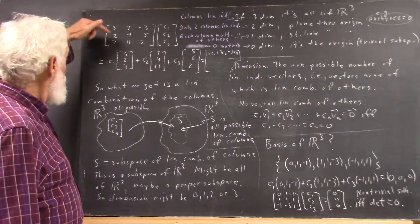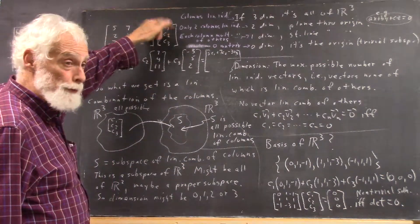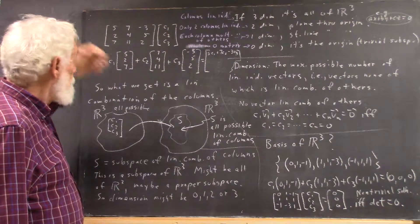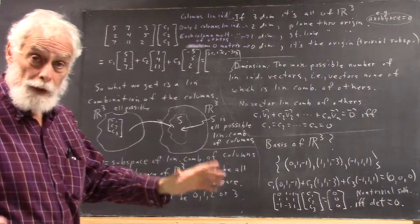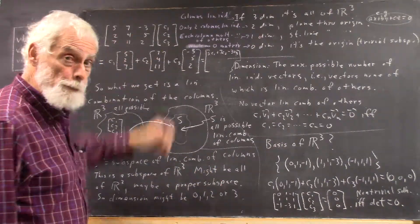Anything you get by multiplying this matrix by something in R3 is going to be a linear combination of the columns of this matrix. And these columns could all be linearly independent,